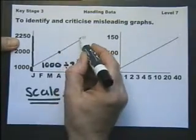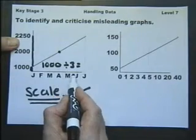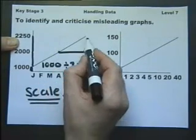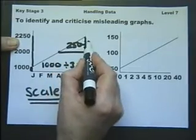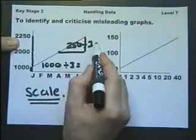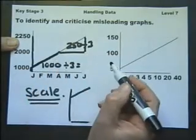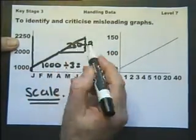Whereas this, although it appears that it's continuing in the same fashion, is one, two, three months. One, two, three months. But it's only 250 in three months. So roughly speaking, that's about 60. So this is saying an improvement of 300 odd, and this is saying an improvement of 60 odd.